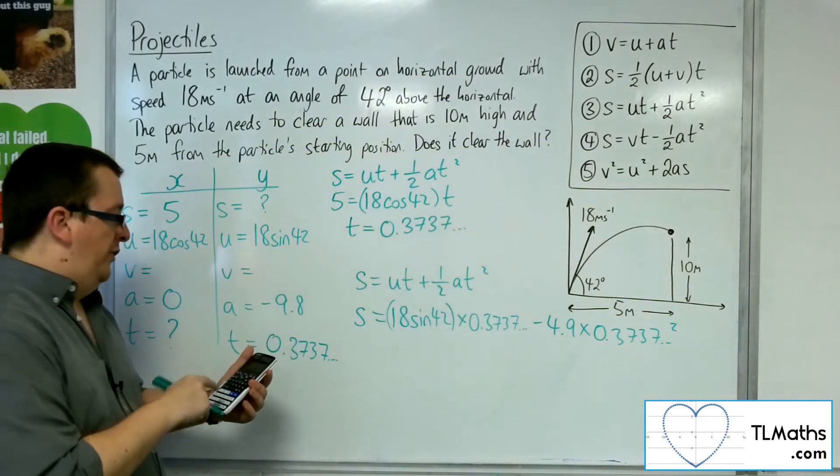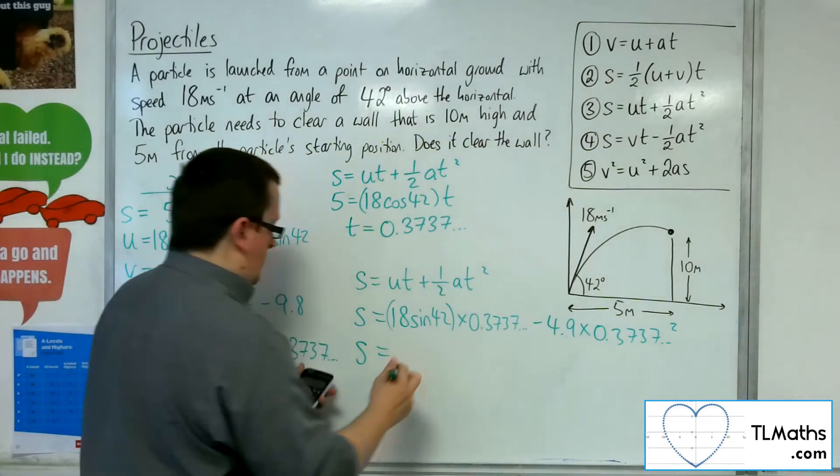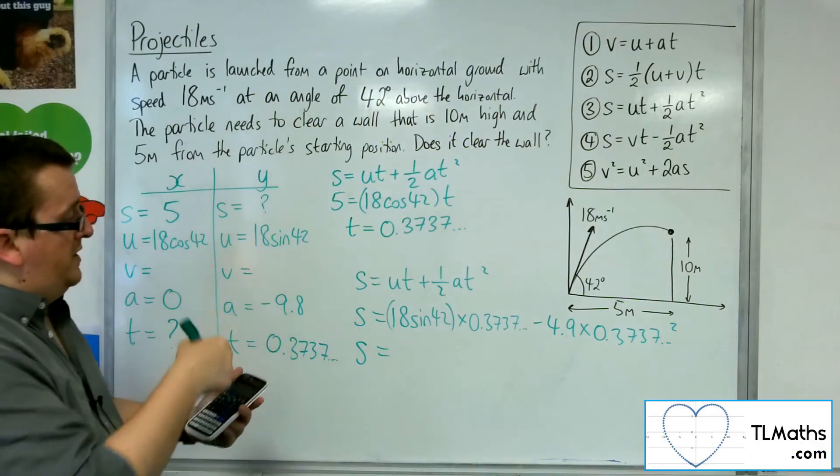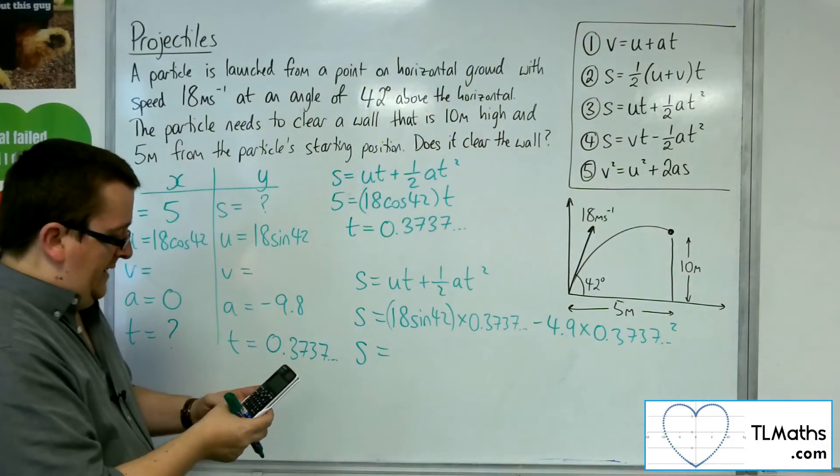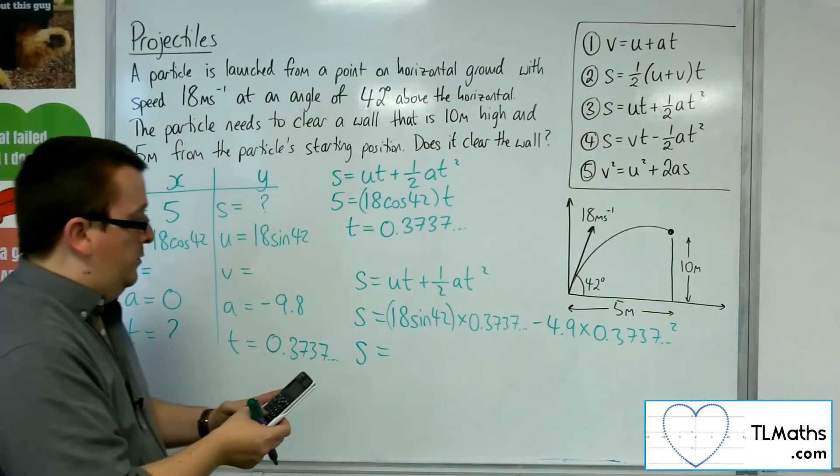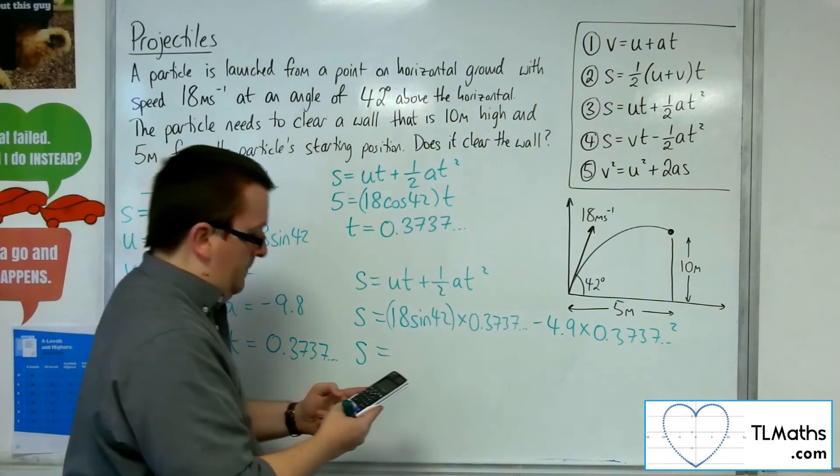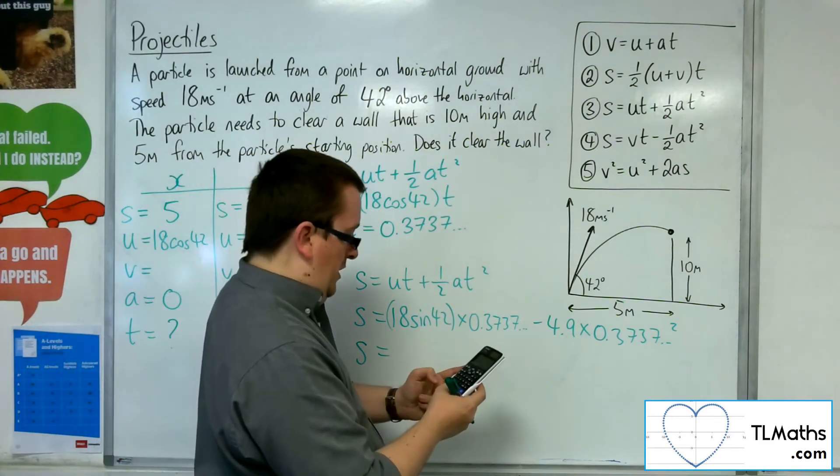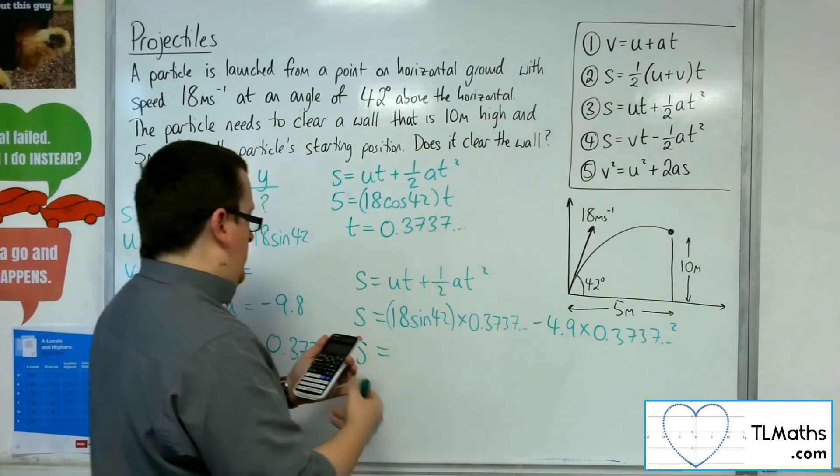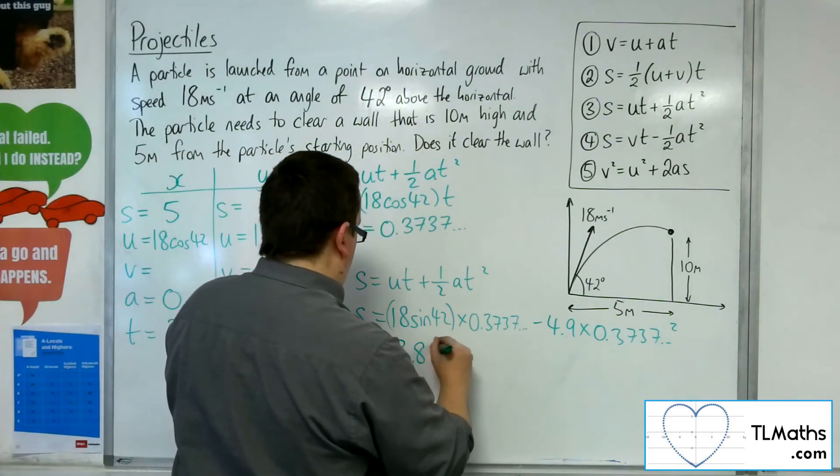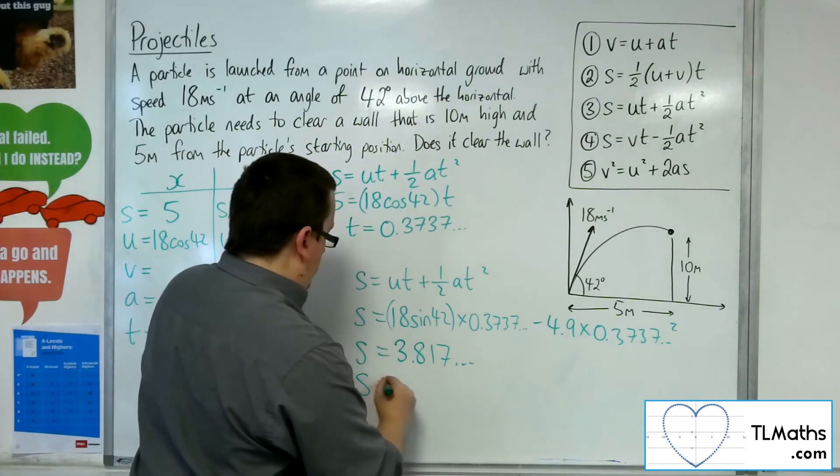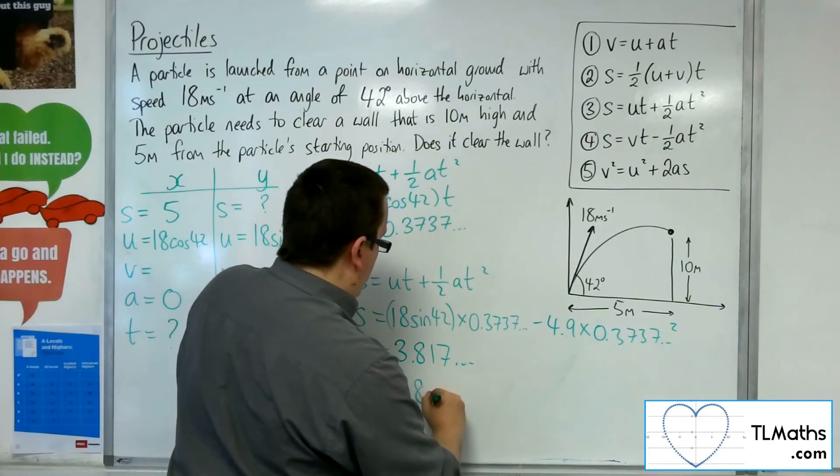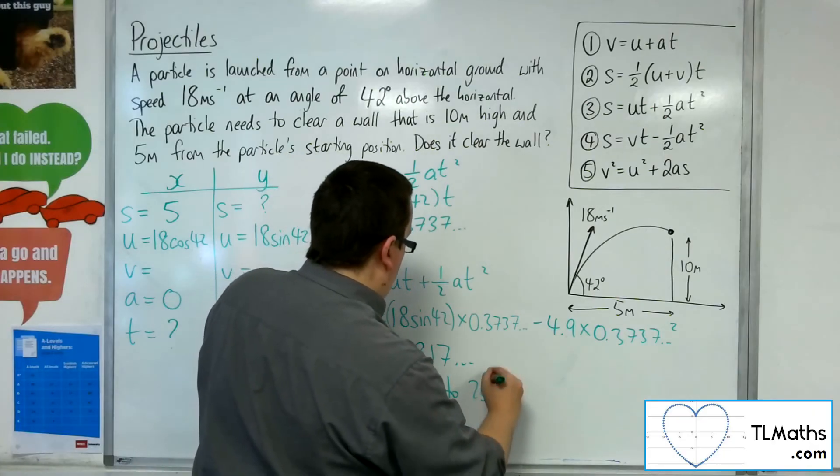So using my answer button, keeping that number from previous in the calculator, we've got 18 times sin 42 times by the answer key, take away 4.9 times the answer key squared. And that gives me 3.817, etc. So S is 3.8 metres to 2 sig fig.